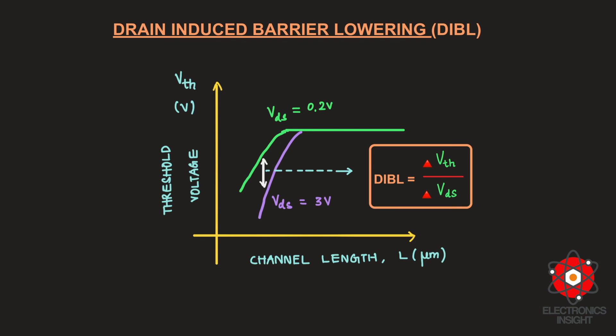In a short channel transistor, as you decrease the channel length, increasing drain-to-source voltage alone can turn the transistor on — which is completely undesirable. The gate should have complete control over the channel, and once that is lost and the drain takes control in turning on the transistor, that is non-ideal behavior. The formal definition of DIBL is ΔVth/ΔVDS — the change in drain-to-source potential has an immediate effect on the threshold voltage, operating the transistor in the sub-threshold regime, causing leakage current issues.